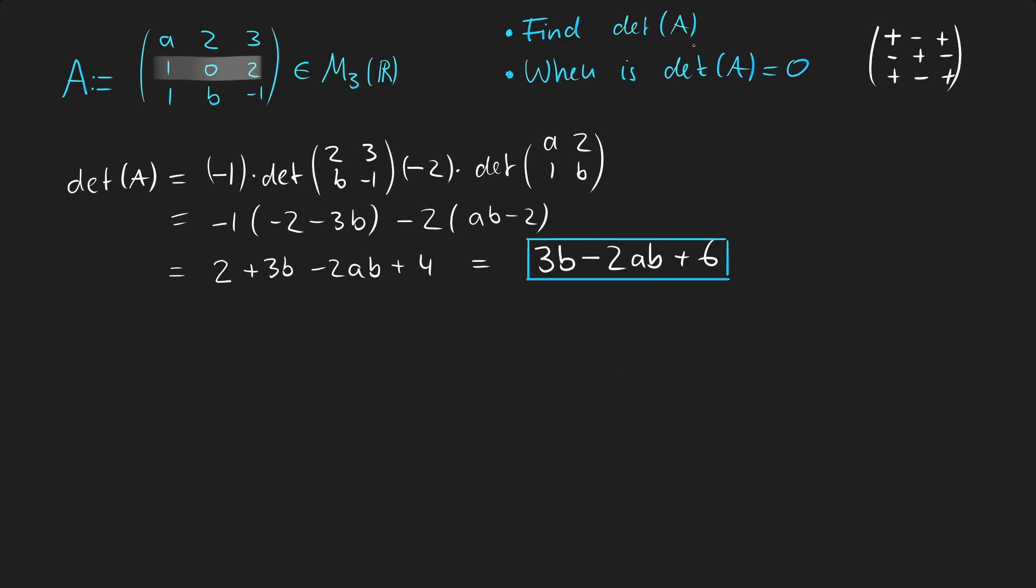Therefore we have finished the first part of the exercise. And now we need to check when the determinant of A is zero. Thus we have to take the result from the first task and equate it to zero. But we have two unknowns in only one equation, and therefore we can only solve this equation for one variable. And I will choose to solve it for A.